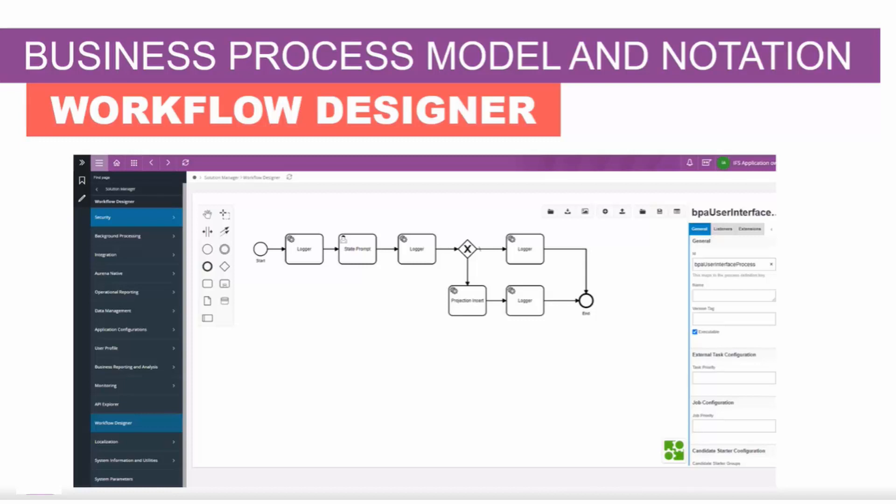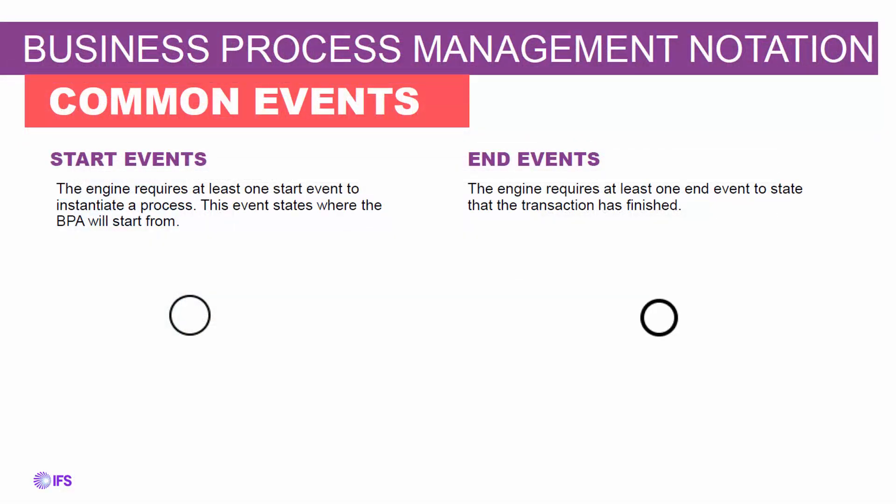The workflow designer has several symbols on the workspace. Some common events are start events and end events. The start event is probably the most common symbol — you always need it to start a process, and this tool automatically adds the start event when you create a new process. The end event defines when a transaction ends or when the process is finished, so every process will always have an end event.